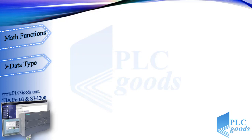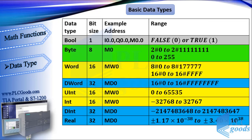Alright, let's see some basics of data types. See this table. The first data type is boolean, which includes one bit. One bit has two states — it can be used to represent whether an input is activated or not, whether an output is on or off, whether a bit memory is 1 or 0, and whether the result of logic operations (RLO) is false or true.